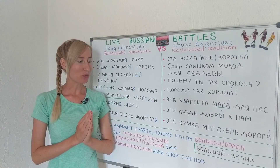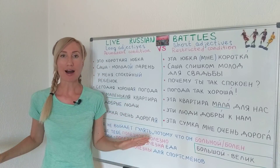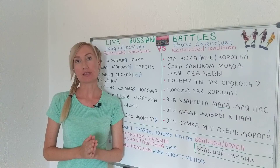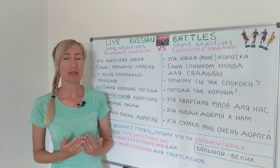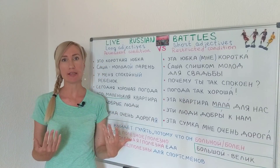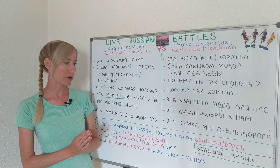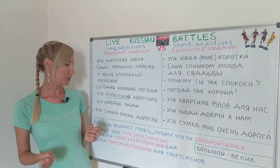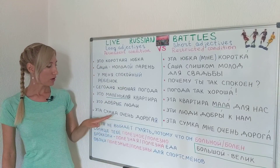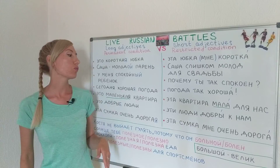For example, это платье мне велико — this dress is too big for me. The plural form is велики: эти джинсы мне велики — these jeans are too big for me. I also prepared a little homework where you have to choose the long or short form.